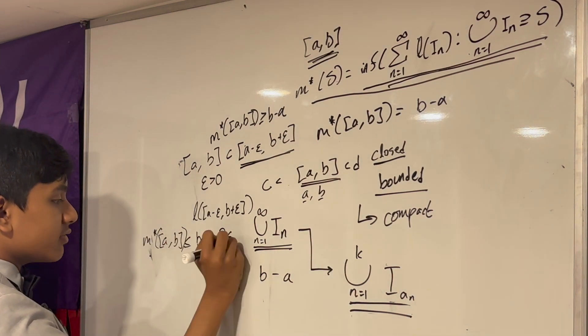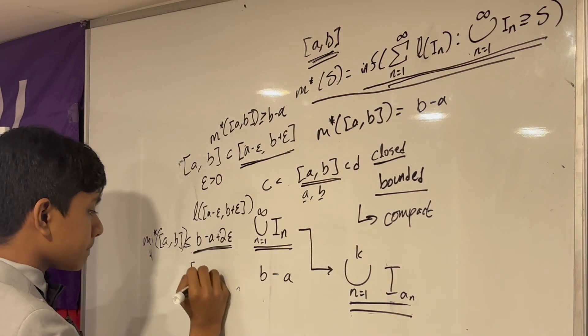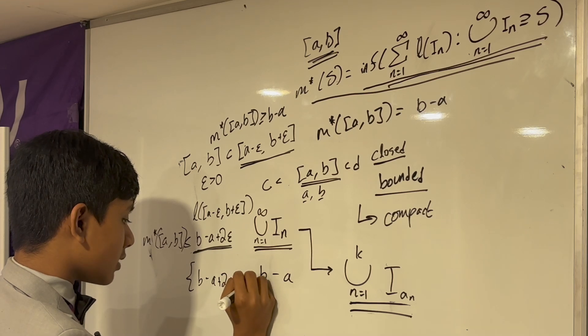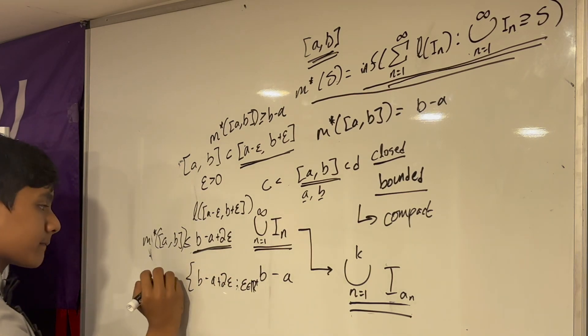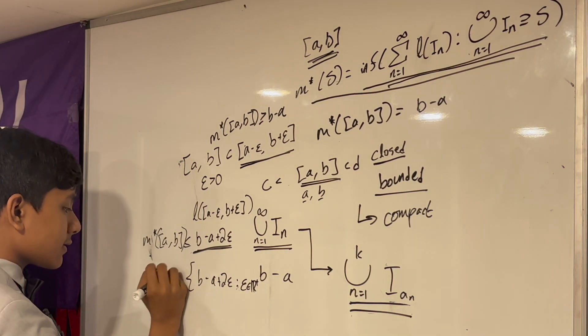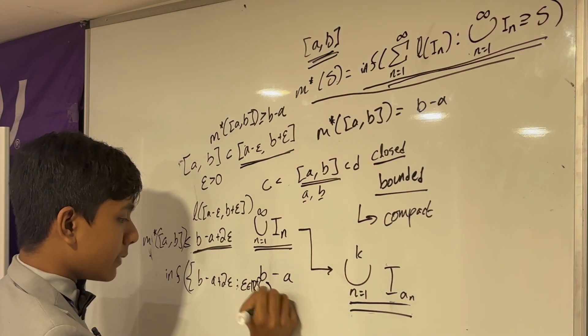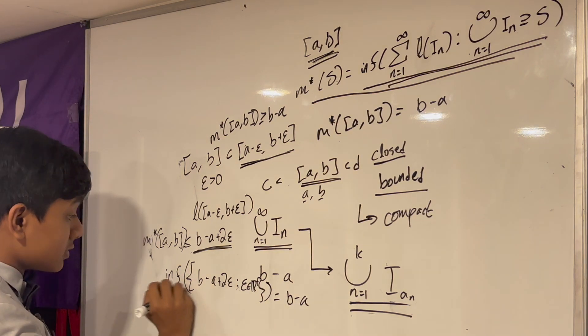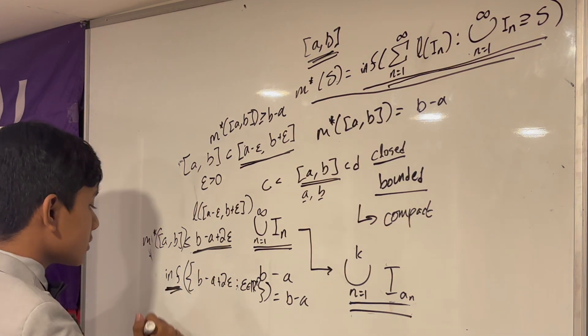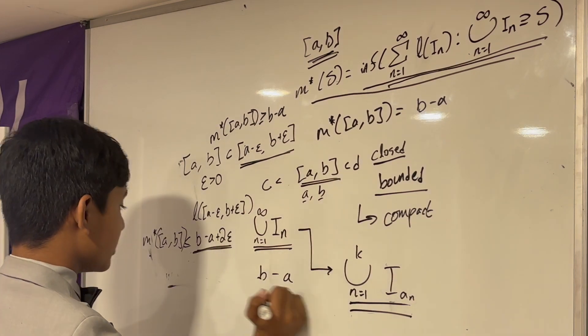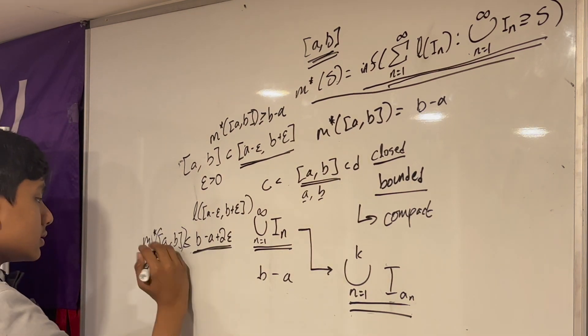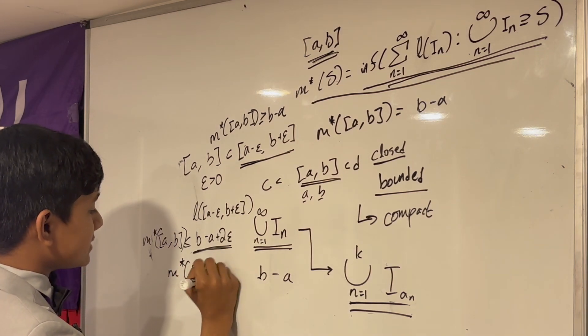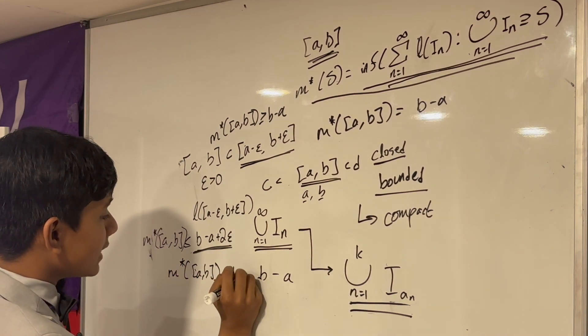So, the infimum of this set, such that epsilon is some positive real number, is just B minus A. Well, yeah, it's the infimum, not the minimum. It doesn't necessarily have to be in the set. Hence, this is less than or equal to B minus A.